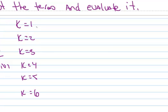So when I've let k equal 1, then I've got 3 times 1 minus 1. So 3 times 1 is 3, minus 1 is 2.